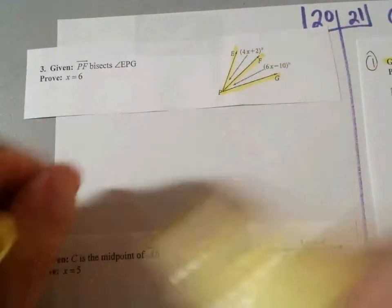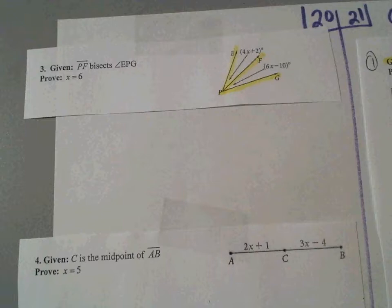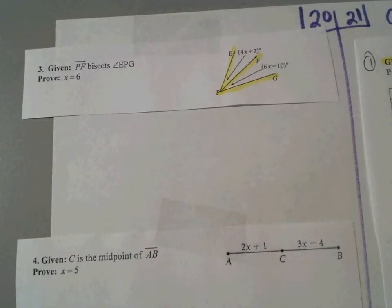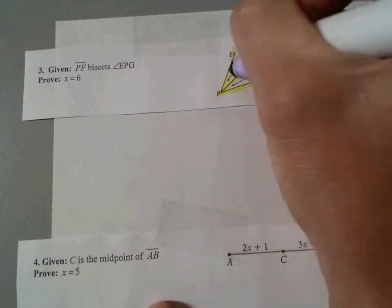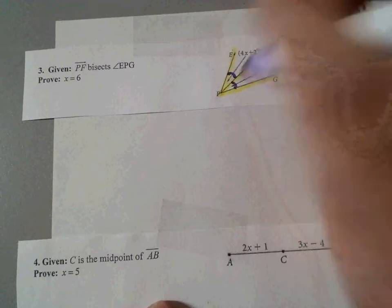What should you mark on your picture if I say something is bisected? Equal marks. So you need to put, good Martha, equal and equal. Those two things are equal.